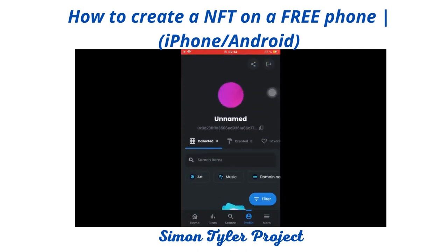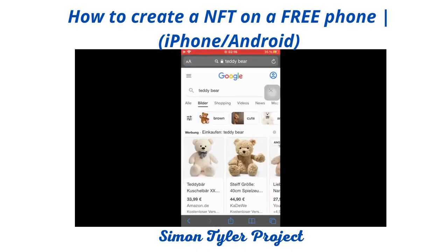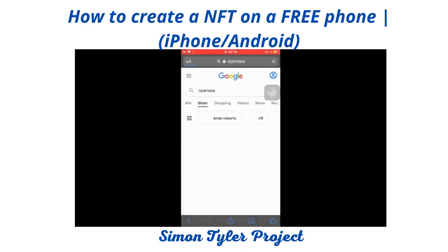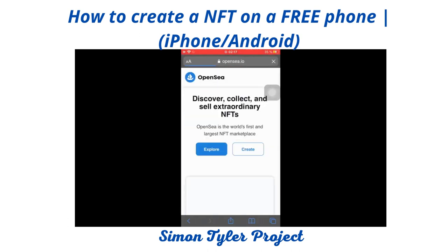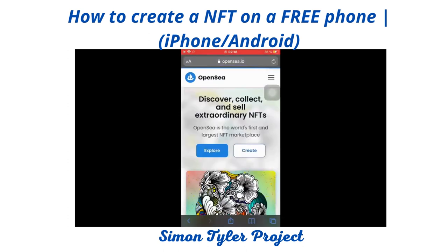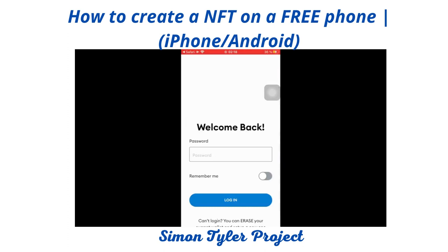I discovered that you can't easily create an NFT through the OpenSea app — I couldn't find the create button — so open Google on your phone and search for OpenSea to do it through the browser instead. Once there, click the Create button. It may take a while to load, but since we already set up MetaMask we can connect quickly. Click the MetaMask option and log in, then connect the wallet to OpenSea.